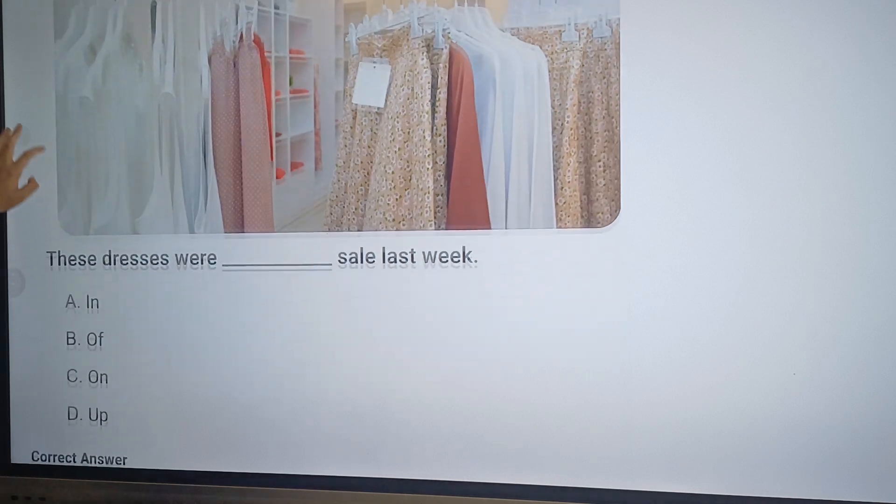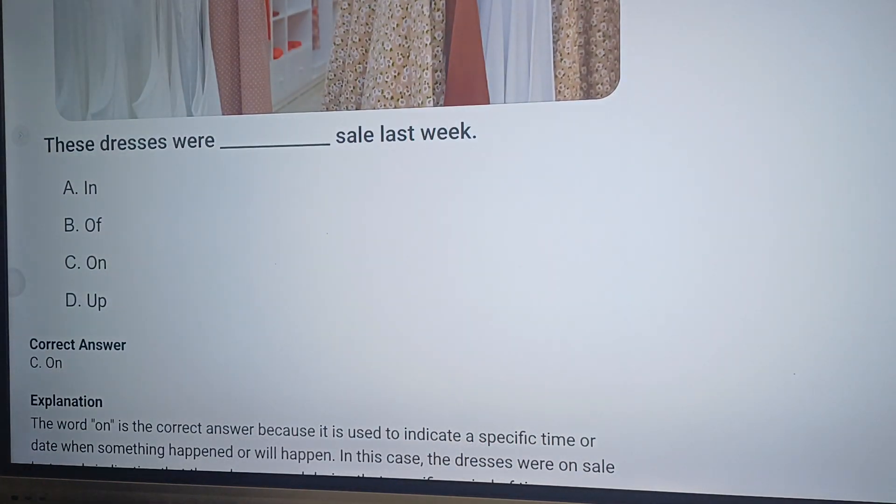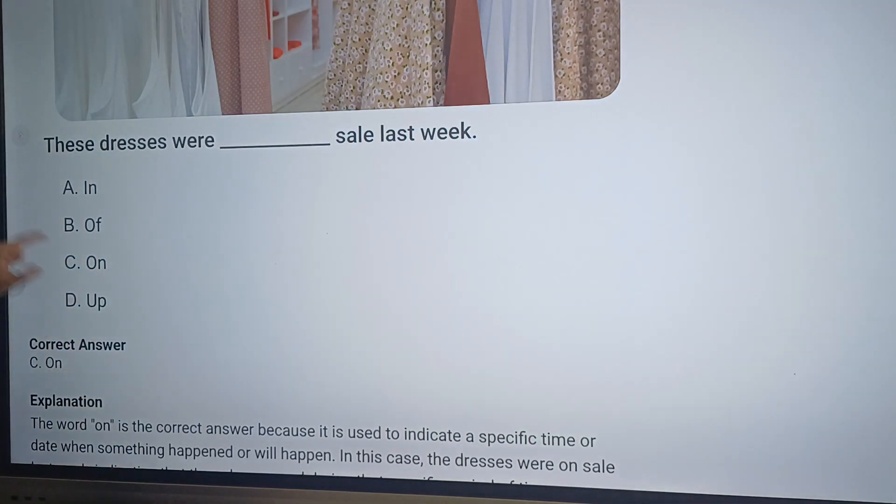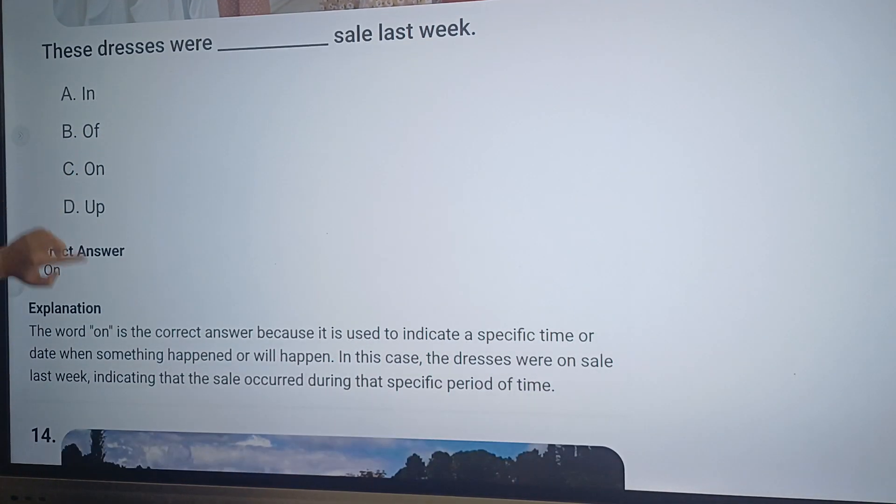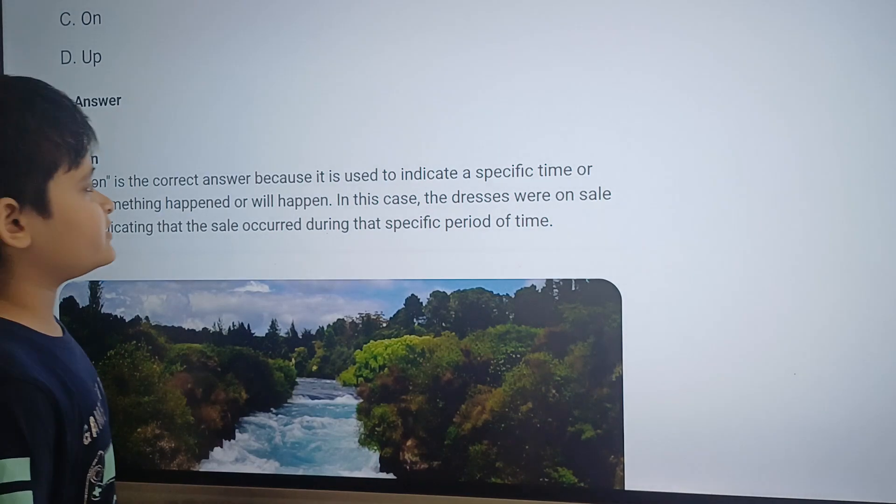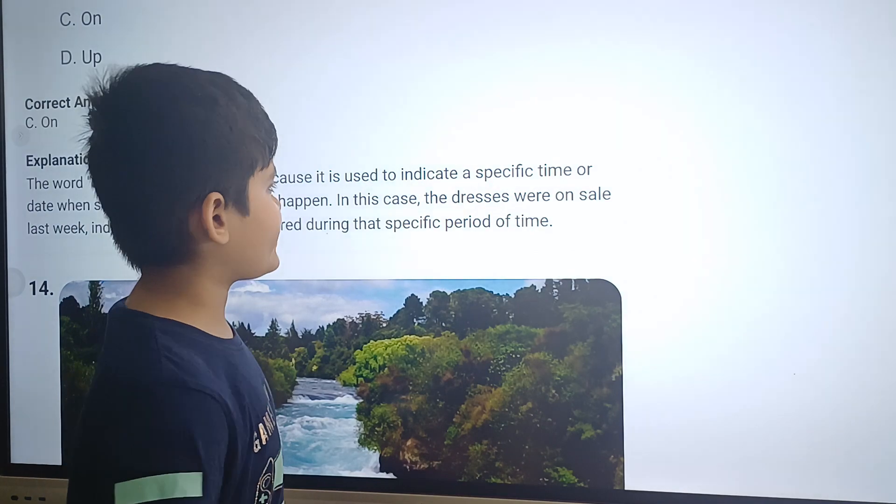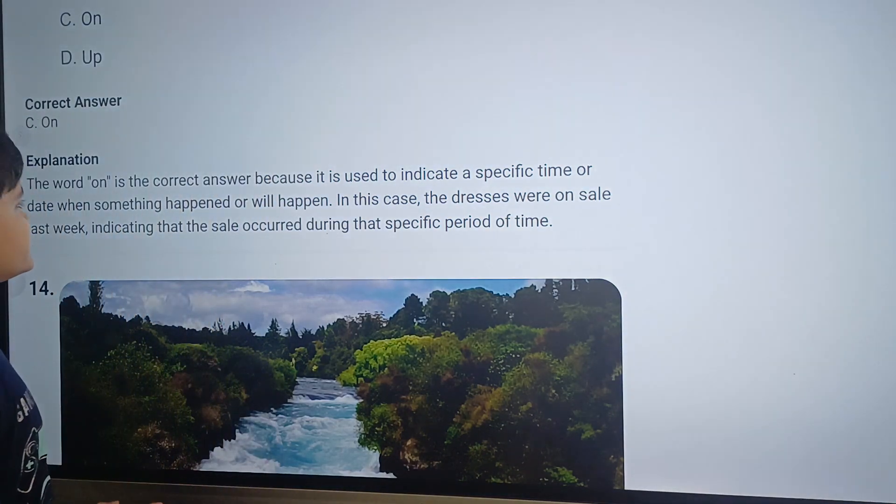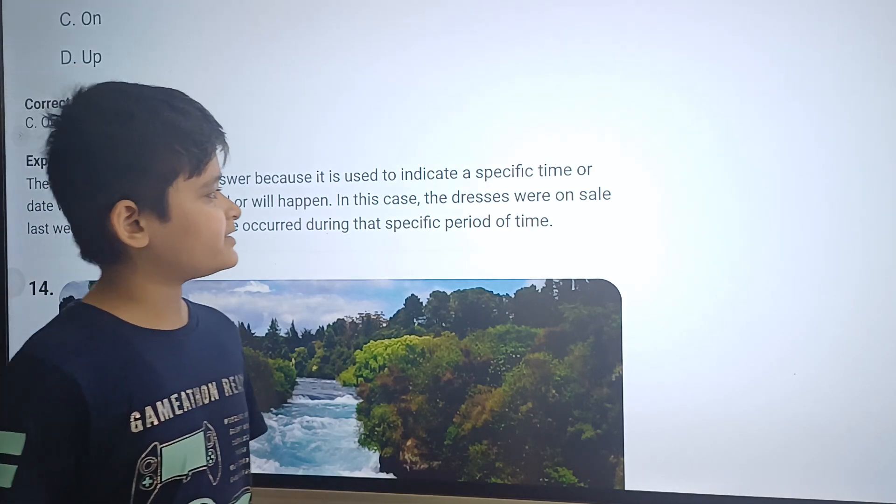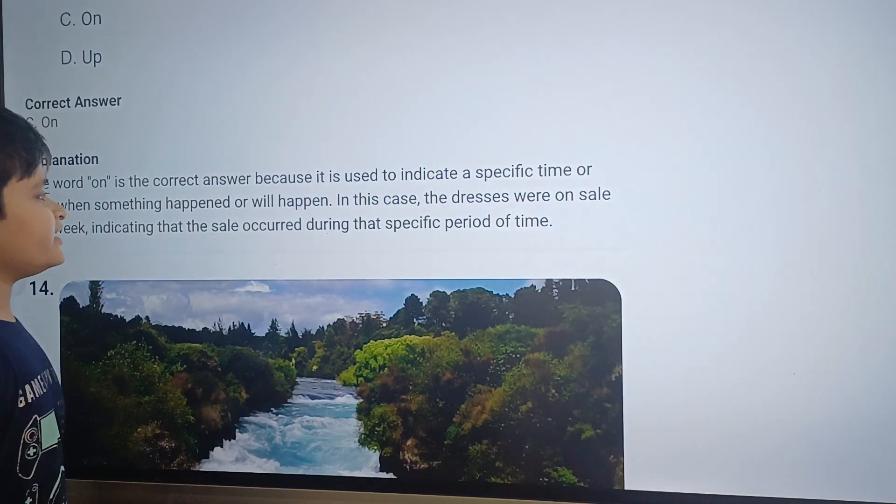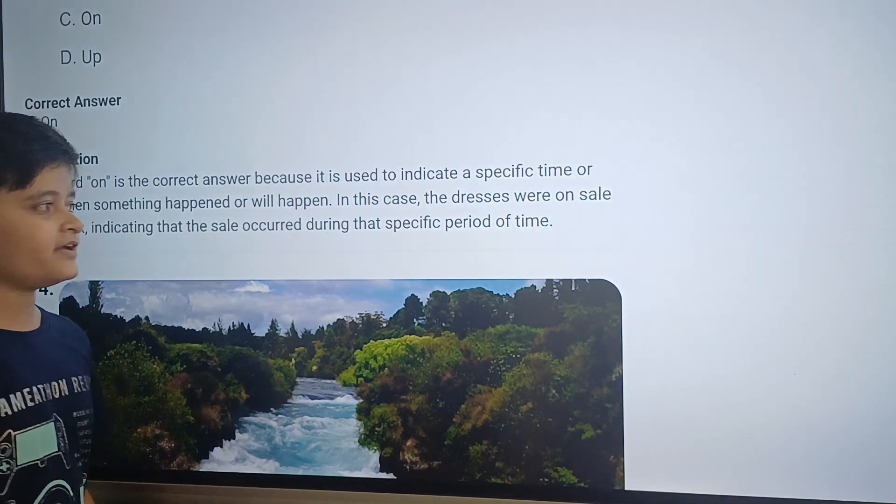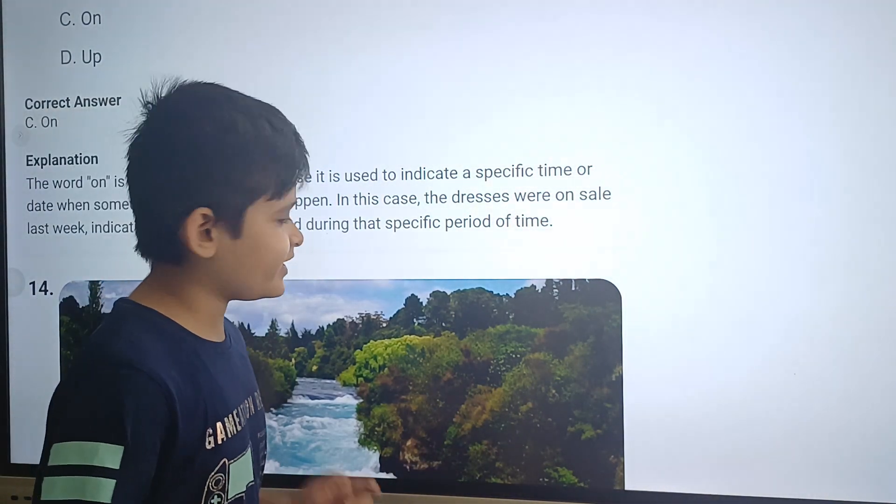Then there is question thirteen. These dresses were dash sale last week. The answer will be C, option C, on. Here is why: The word on is the correct answer because it is used to indicate a specific time or date when something happened or will happen. In this case, the dresses were on sale last week, indicating that the sale occurred during that specific period of time.